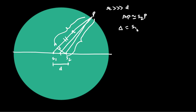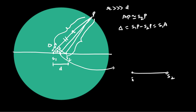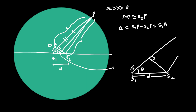The path difference is S1P minus S2P, which equals S1A — the extra path traveled by the ray from S1. If the angle from the axis is theta, then in the right-angle triangle with hypotenuse d, the path difference S1A equals d cos theta. This path difference equals n lambda for constructive interference.